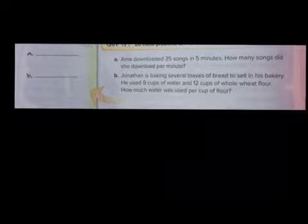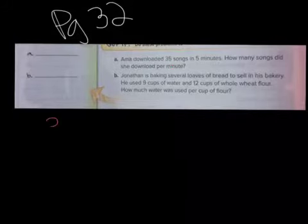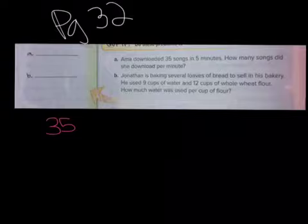Let's jump ahead now to page 32. This is page 32. Question A and B. All right, again, we're looking for the unit rate. Emma downloaded 35 songs in five minutes. 35 in five minutes. How many songs did she download per minute? 35 songs per five minutes. Now again, let's check.